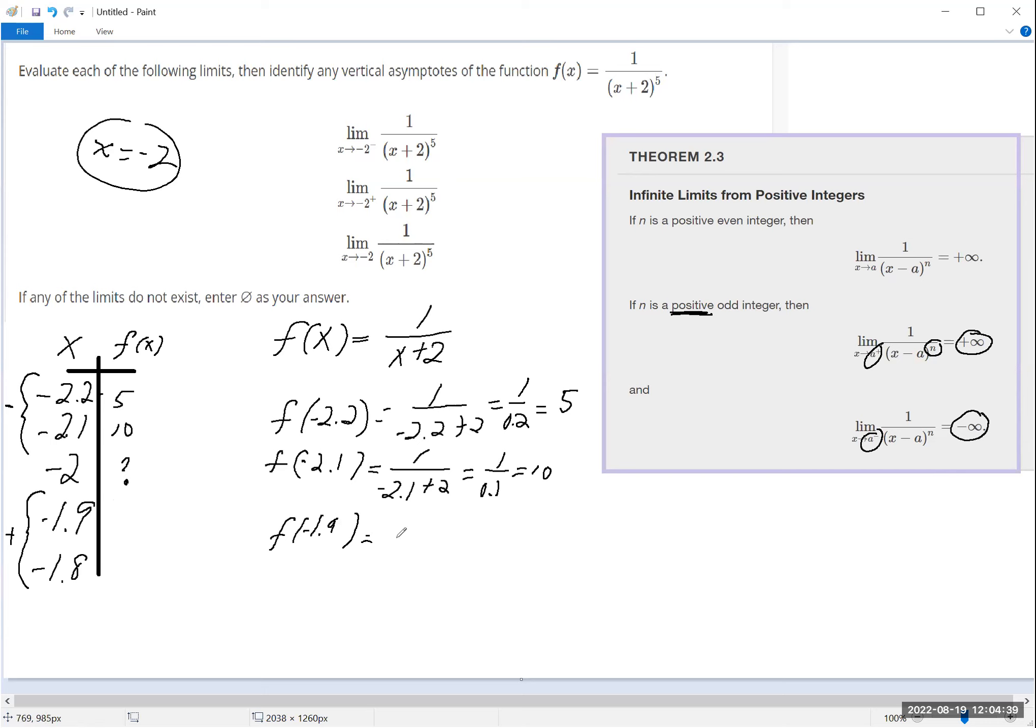So let's try now to plug in negative 1.9. So 1 over negative 1.9 plus 2 is gonna be 1 over... by the way I believe these are negatives, I just caught that, which makes these negatives.